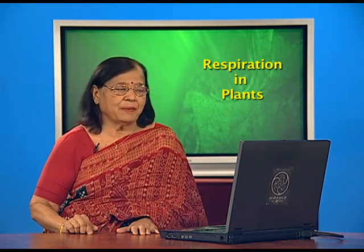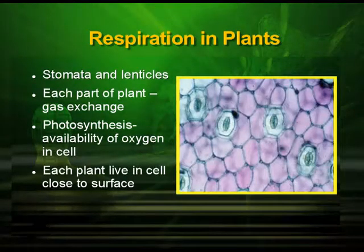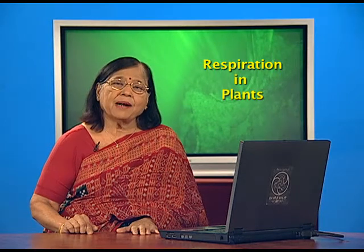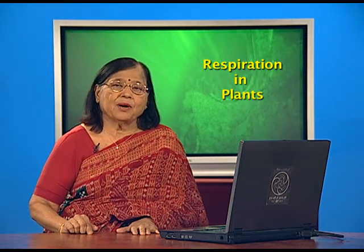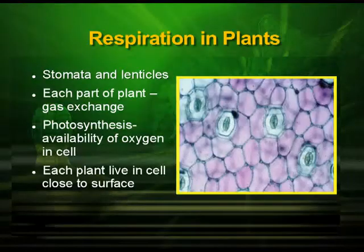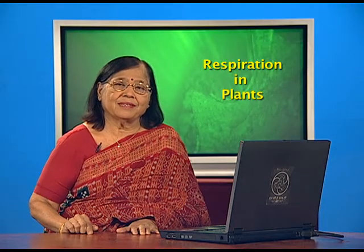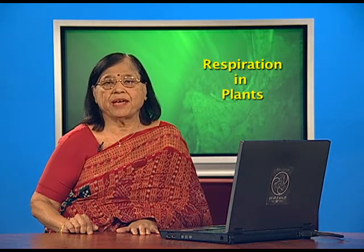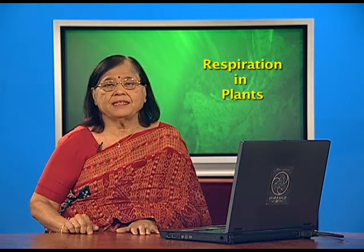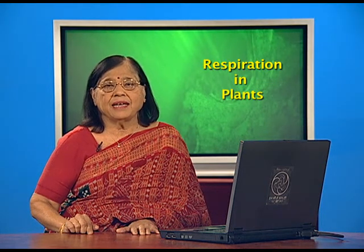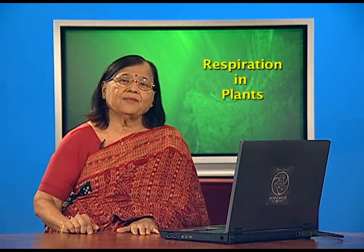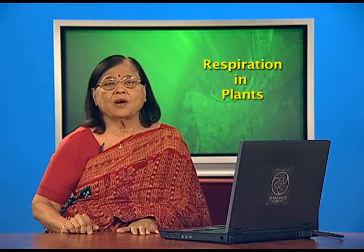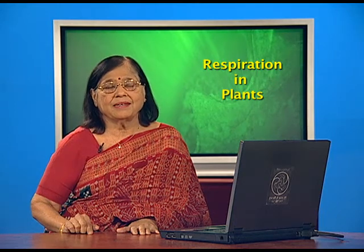When photosynthesis takes place, oxygen is immediately released and part of it is immediately utilized in respiration during the day. During night time, each cell takes oxygen from the surroundings bit by bit. Each living cell in the plant is close to the surface and hence indirectly in contact with air or atmosphere, making it easier to take in oxygen. That is how the plant is able to survive in the absence of sunlight during night.